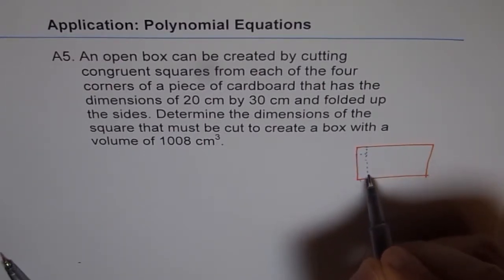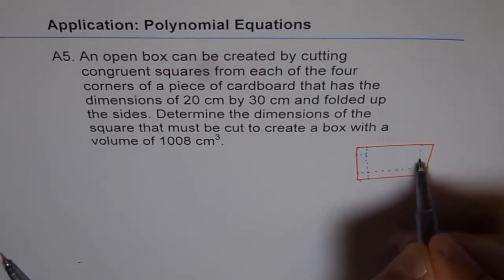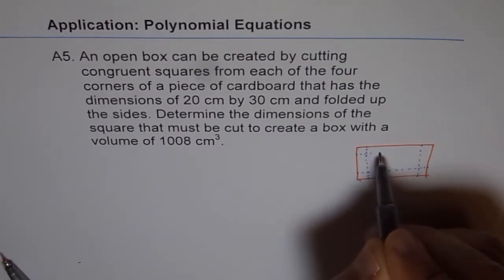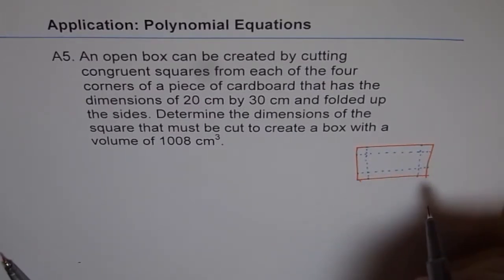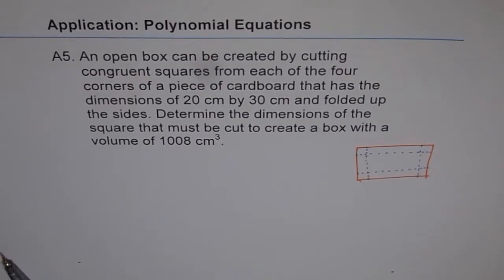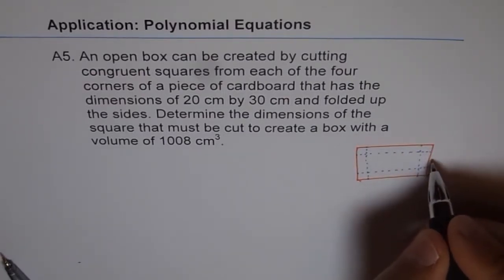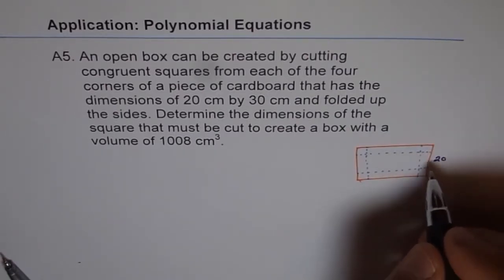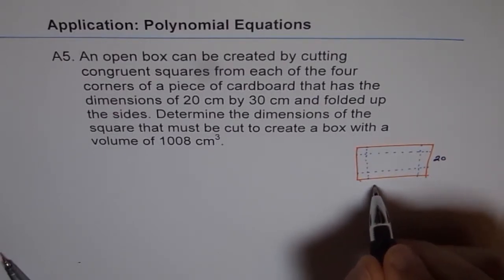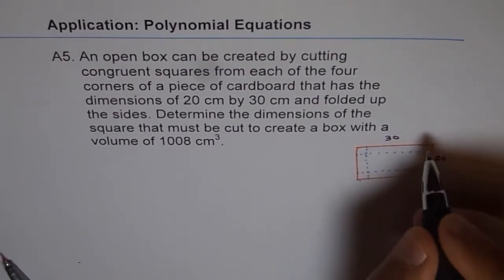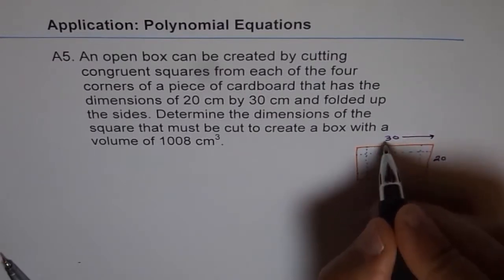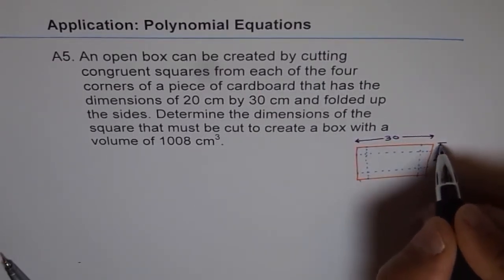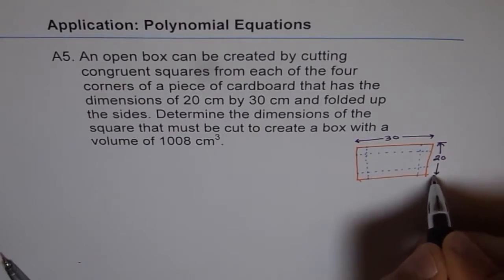So I will just draw this dotted line here. So let the dimensions be 20 by 30, so this is 20 total, and this is 30. So 20 by 30 is from here to here. 20 is this, in cm.